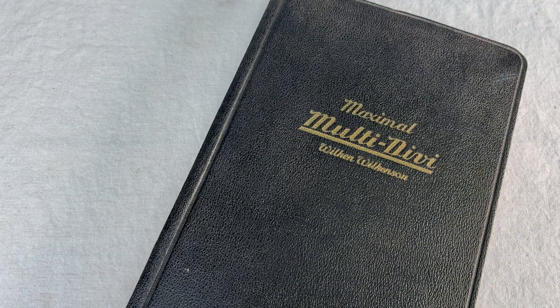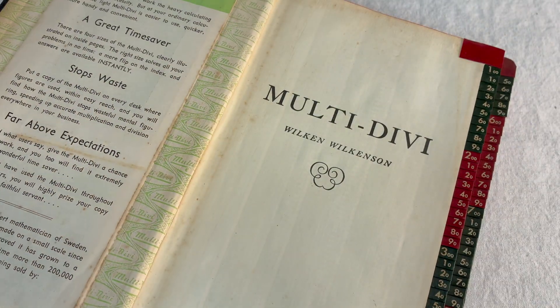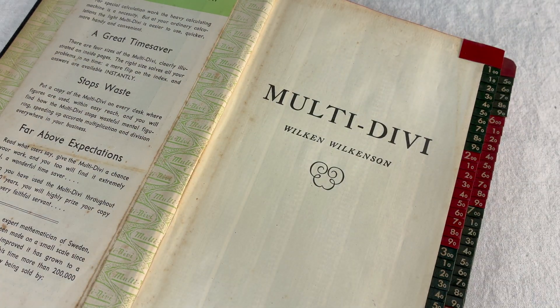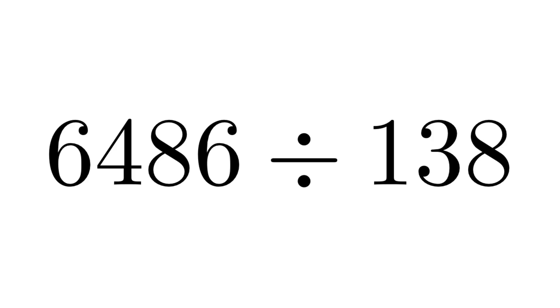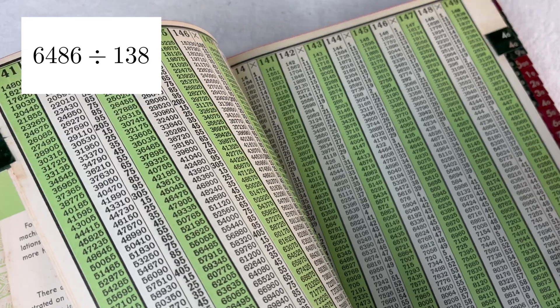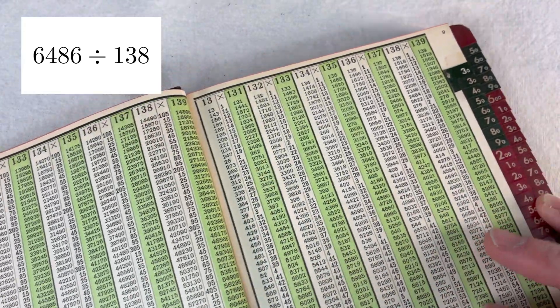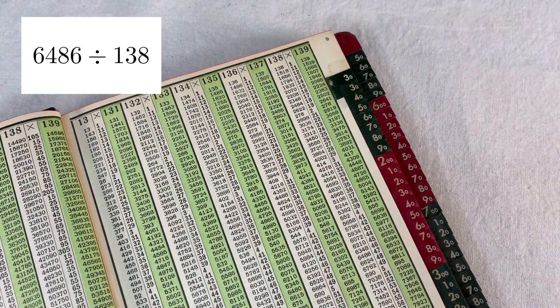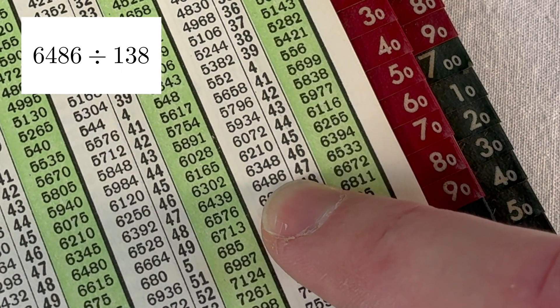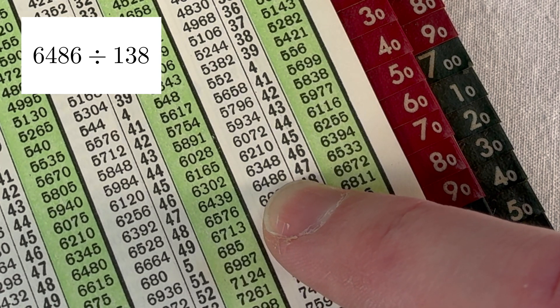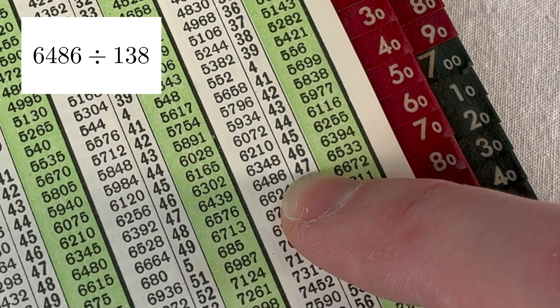So, that's the Multi. What about the Divi? Well, to divide, you just look it up kind of the other way around. Like, if I wanted to do 6486 divided by 138, I go to the 138 page and then I look down there for an answer of 6486. And there it is. 138 × 47 is 6486. And that means 6486 divided by 138 is 47.